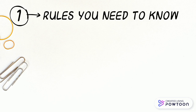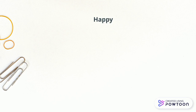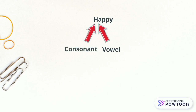The first rule you'll need to know is, if a word starts with a consonant and a vowel, put the first letter of the word at the end and add a Y. For example, happy. Happy starts with both a consonant and a vowel, H and A. So we're going to move H to the back of the word, then we need to add a Y. And this is our result.